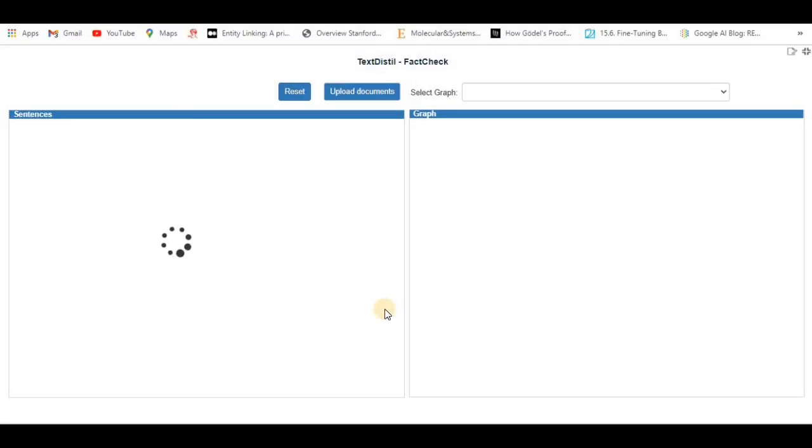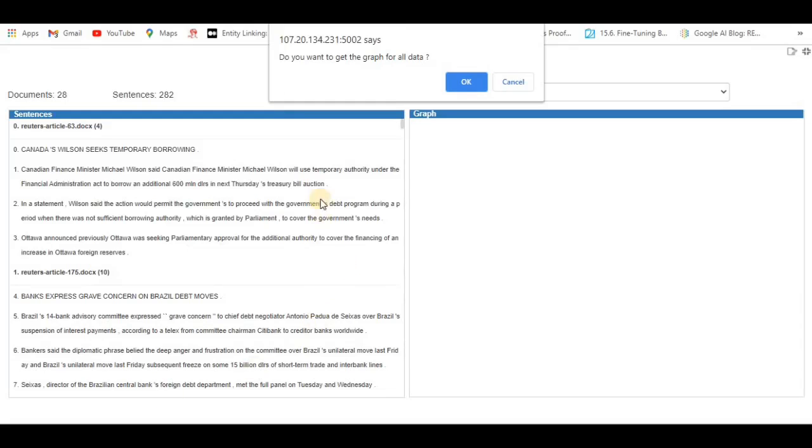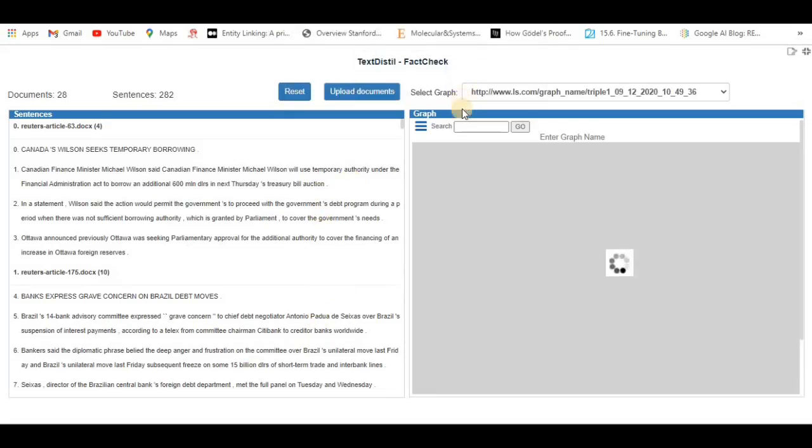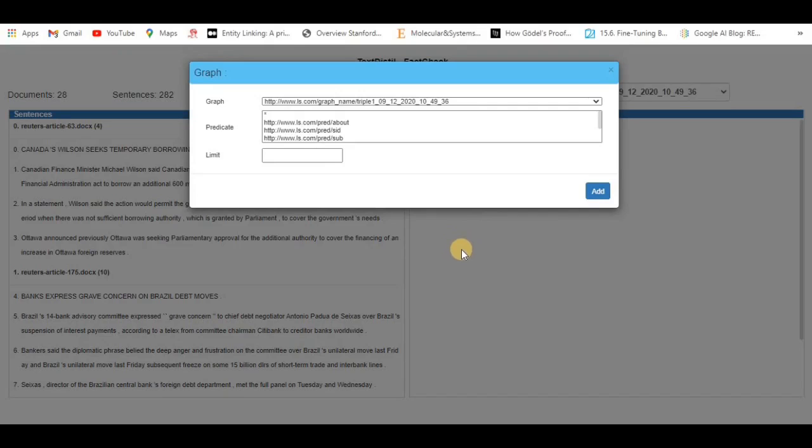Once the pipeline processing completes, documents are displayed on the left pane, and simultaneously the extracted triples in the form of n-quad file is loaded behind the scenes into AnzoGraph database. We will now run a SPARQL query against the AnzoGraph database to pull all the triples from the newly loaded graph of triples and display the results in the right pane.